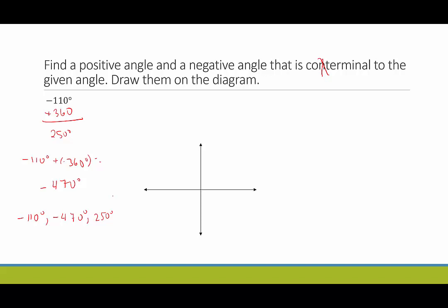Drawing negative 110: going down to negative 90, negative 180, negative 270, negative 360 — negative 110 is in between negative 90 and negative 180, closer to 90, so we draw it there using a clockwise arc. For negative 470, we do a complete clockwise circle to get to negative 360, then go 110 more to reach negative 470. For 250, we start on the initial side and go counterclockwise. You can see they all end in the same place, though they look very different.